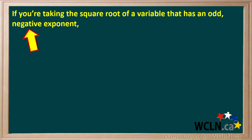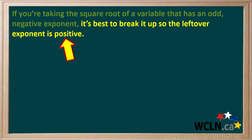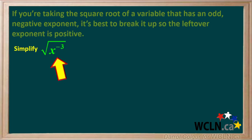If you're taking the square root of a variable that has an odd negative exponent, it's best to break it up in such a way that the leftover exponent is positive. For example, let's say we're asked to simplify the square root of x to the negative 3. We'll convert x to the negative 3 to x to the negative 4 times x. The exponents negative 4 plus 1 add up to negative 3.